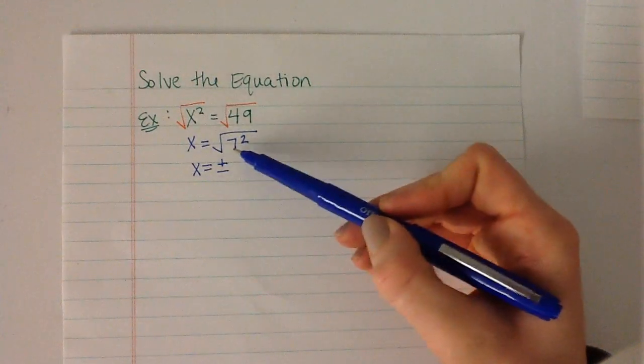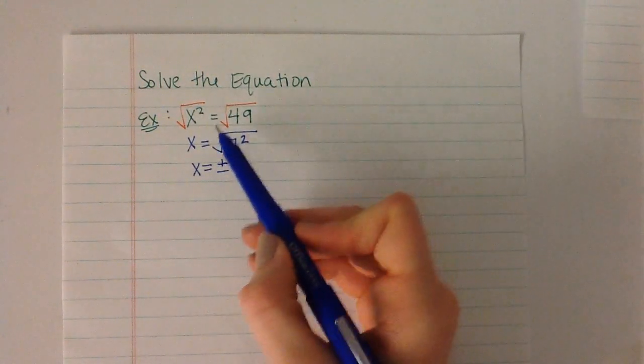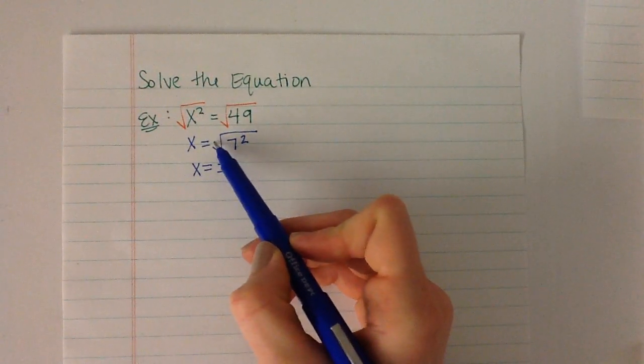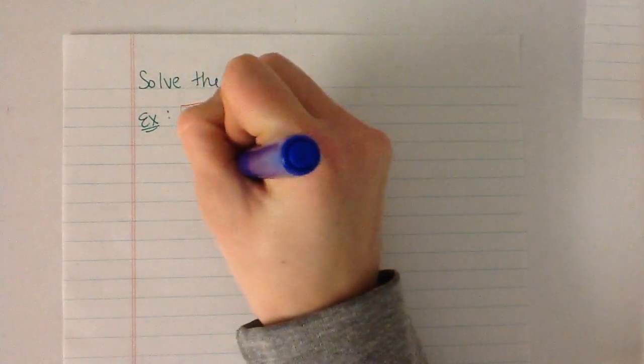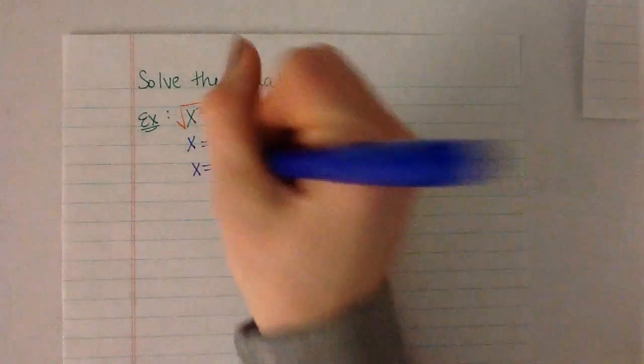So, if we have the square root of 7 squared, our index is 2, so one group of 2 can go into 2. So we have plus or minus 7.